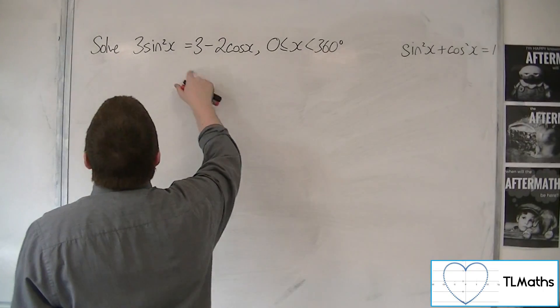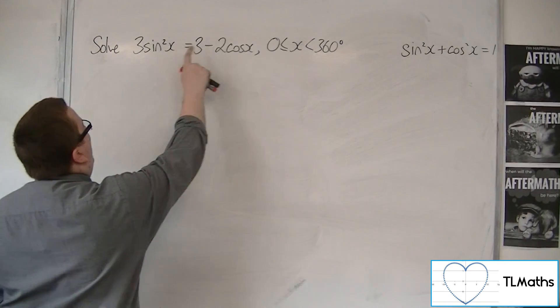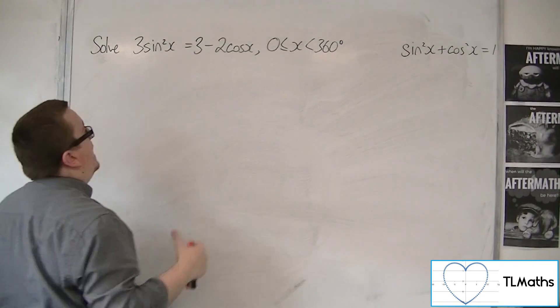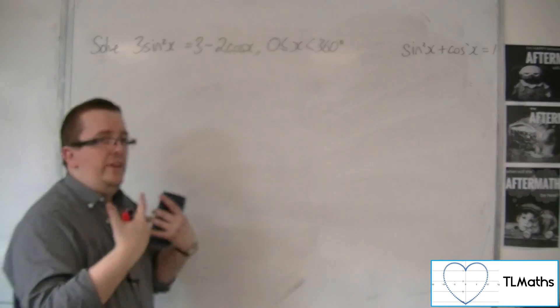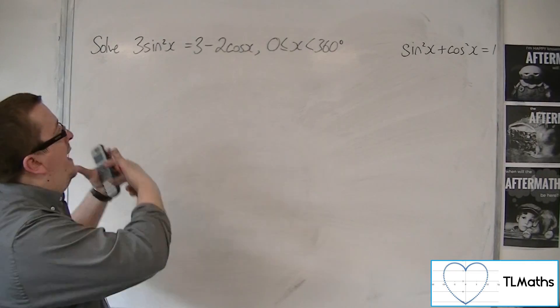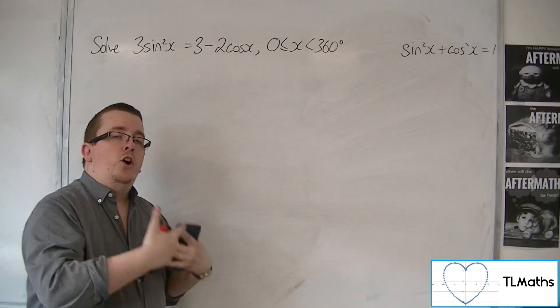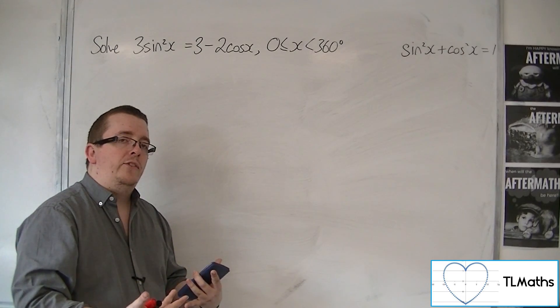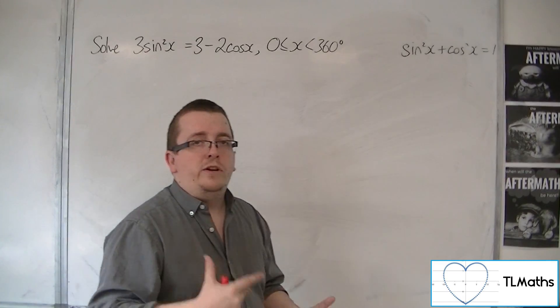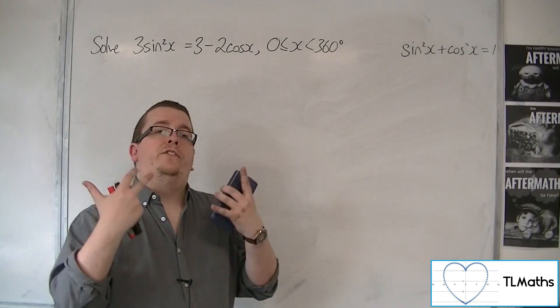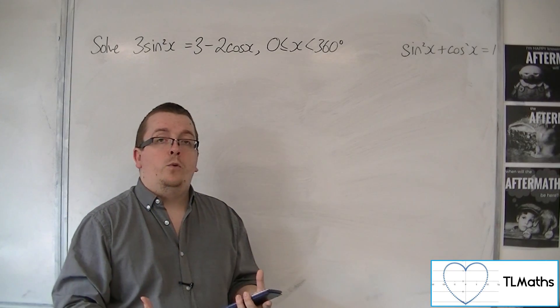So what I can see is that I've got a sine squared and I've got a cos x. Now, I need to get in this type of problem everything to be either in terms of sine x or everything to be in terms of cos x. Only then do I have a chance of factorising it and then solving the equations that follow.